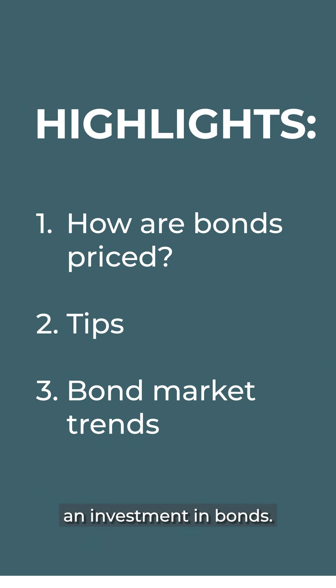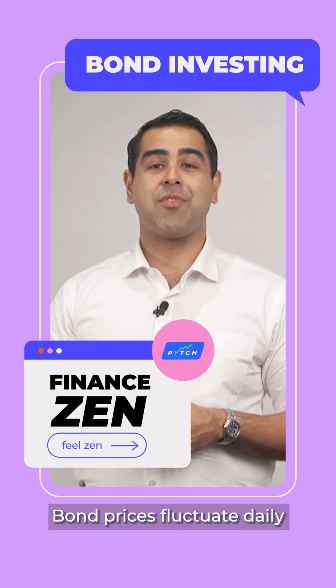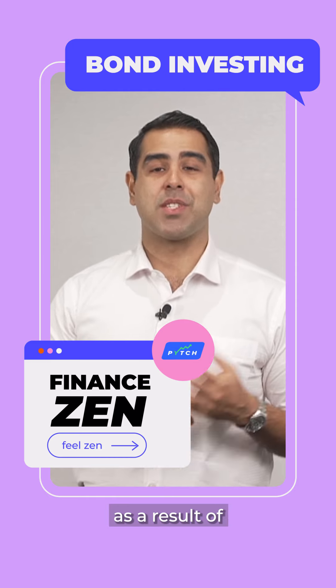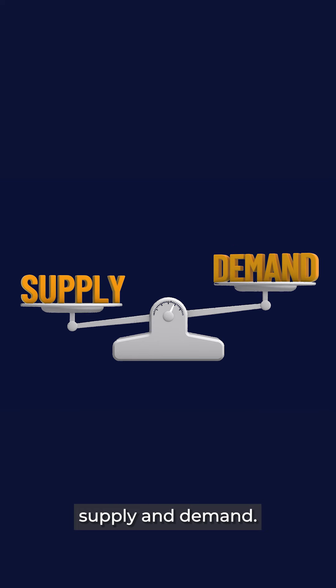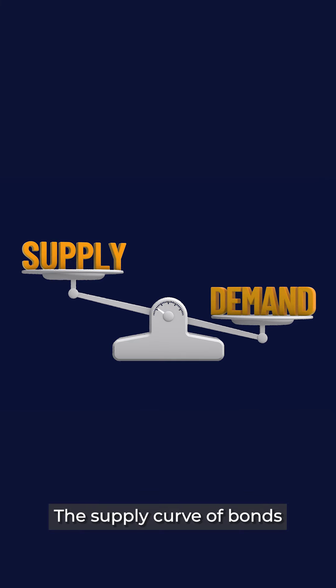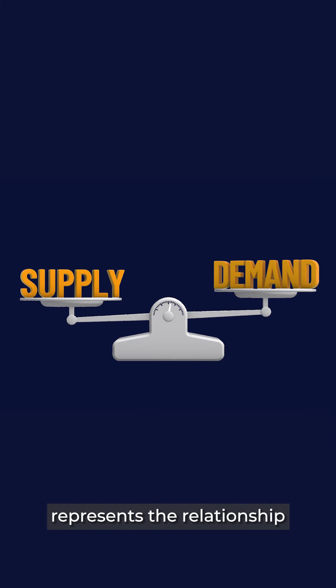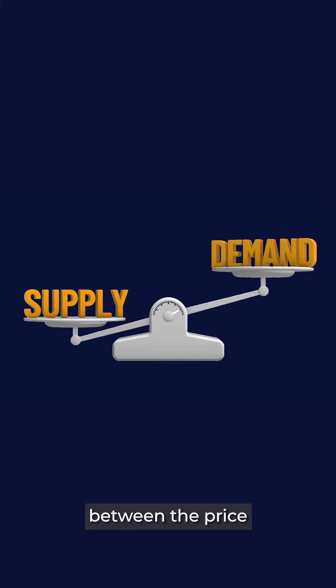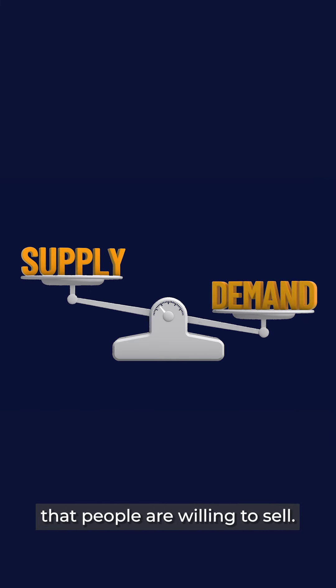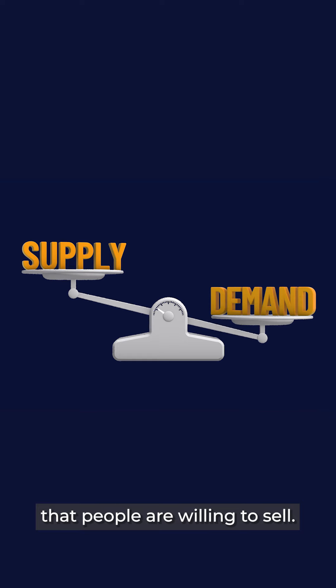Bond prices fluctuate daily as a result of supply and demand. The supply curve of bonds represents the relationship between the price and the number of bonds that people are willing to sell.